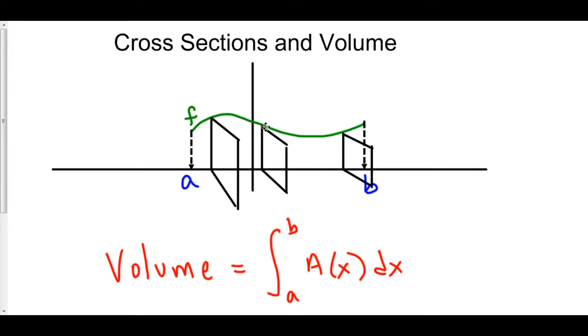Now, how can we find the area of each of these cross sections? Simple. In this particular example, we have squares. The area of a square is side squared.